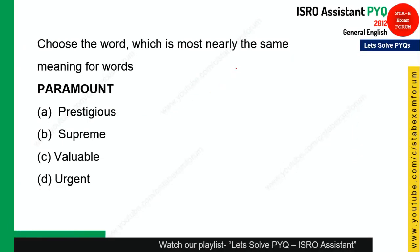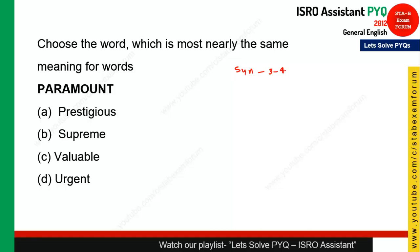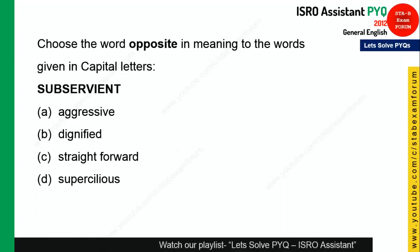The next question is again synonyms. Generally in this exam you will find three to four synonym questions. The word is 'paramount' — a very simple word. As you know, paramount means supreme, it is top of all. So option B is the right answer.